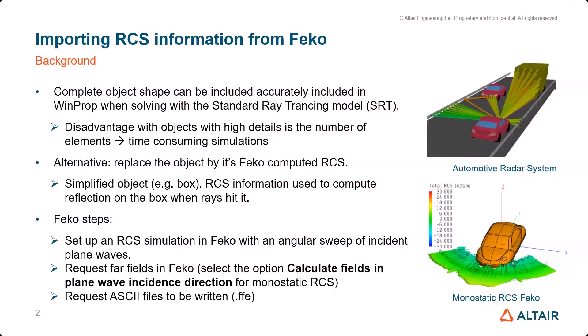In simulations of automotive radar systems, we can include the shapes of any object accurately in WinProp and use standard ray tracing in the analysis. One disadvantage of modeling objects fully is that some objects can have many surfaces, and for those objects we may be pushed to approximate them to have quicker simulations and gain on runtime. The alternative approach is to perform the radar cross-section simulation in fecal and then use the results in WinProp. After we have access to the RCS information from fecal — as shown here with the car and its computed RCS — we can model any object in WinProp as a box or simplified object.